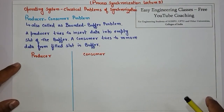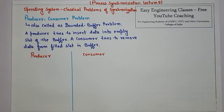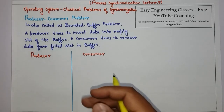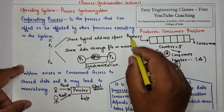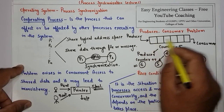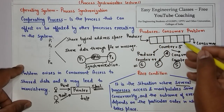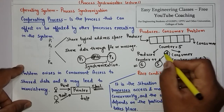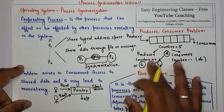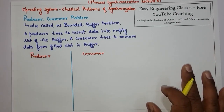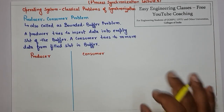Hello everyone. In today's video lecture, we are going to see the producer-consumer problem. It is also called as the bounded buffer problem. We have seen a brief of the producer-consumer problem in the very first video of the process synchronization lecture series, in which the producer is the process that adds some item in the buffer and the consumer is the process that takes out items from the buffer. So now we will see how we can solve the producer-consumer problem with the help of semaphores.